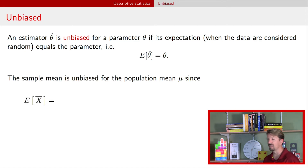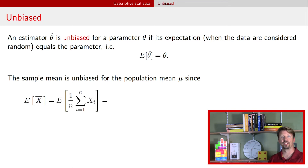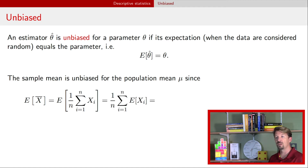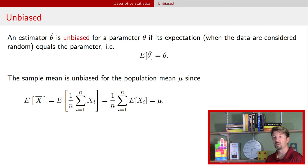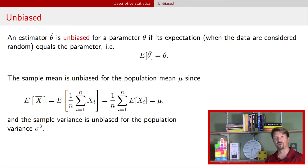If we look at the sample mean, we can calculate the expectation when the population has a common mean mu. We plug in the definition of the sample mean: 1/n times the summation of the x_i's. We pull out the 1/n — because it's an expectation, we don't have to square it. The expectation of the sum is the sum of the expectations. Each individual expectation is just mu. We sum that n times, then divide by n, and therefore we get mu. Thus, the sample mean is an unbiased estimator of the population mean. Similarly, the sample variance defined in the previous video is an unbiased estimator of the population variance sigma squared.